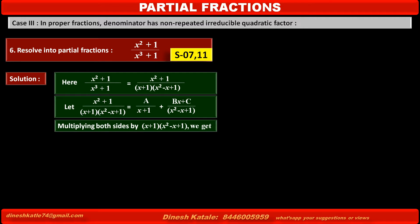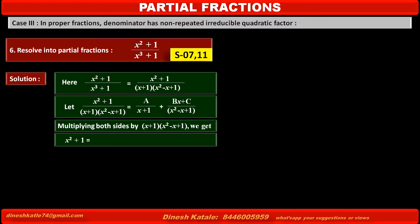Multiplying both sides by the LCM of the denominator, which is (x + 1)(x² - x + 1), the left-hand side becomes x² + 1. The first term on the right-hand side becomes A(x² - x + 1).